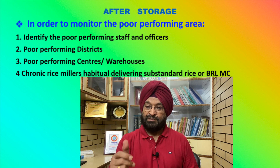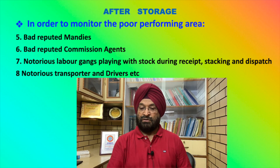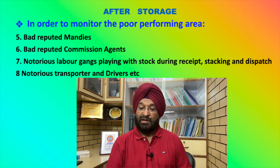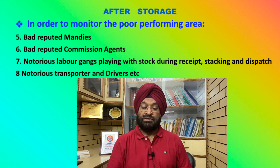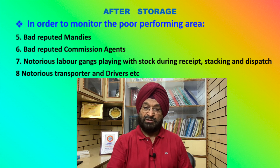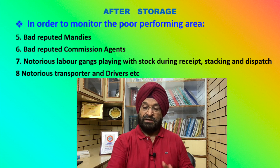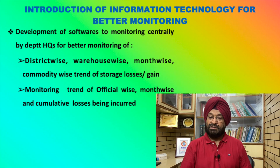Identify specific poor-performing officials, poor-performing districts, poor-performing centers and warehouses. Also identify rice millers who habitually deliver sub-standard rice with excess moisture, bad-reputed mandis that pour water and send stock to depots, bad-reputed commission agents and labor gangs who — in association with drivers and commission agents — manipulate the stacking, sieving, and dispatching operations. List notorious transporters and drivers and keep special vigil over them.